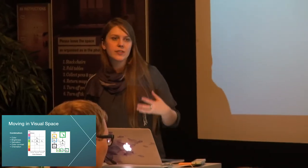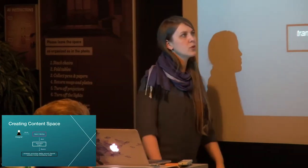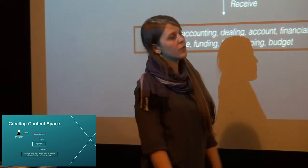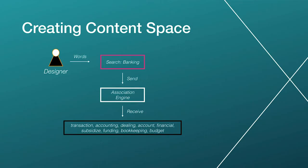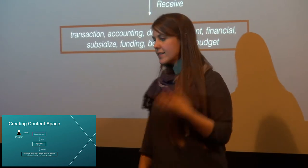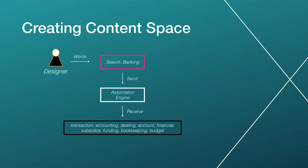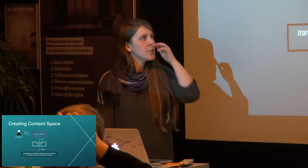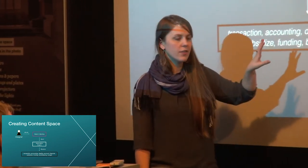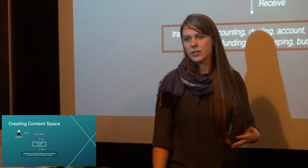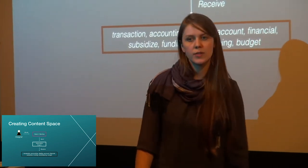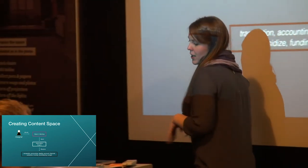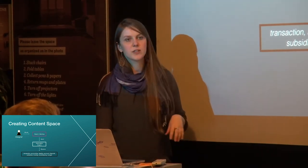This is only visual — visual says a lot but not too much. In order to make it meaningful, we also need content. In creating a content space, we observe the designer searching in the normal search engine for words and use the successful search words for an association engine that gives us human associations — for example, in the case of banking: accounting, bookkeeping, budget, and similar things. This together with the visual decision is live-queried in the background to find an image online that is successfully mapped to one of the content spaces and the visual space, and only if successful will it suggest something to the designer.